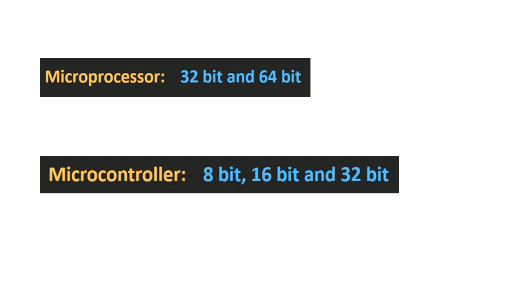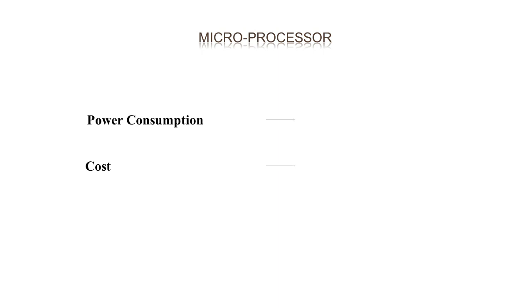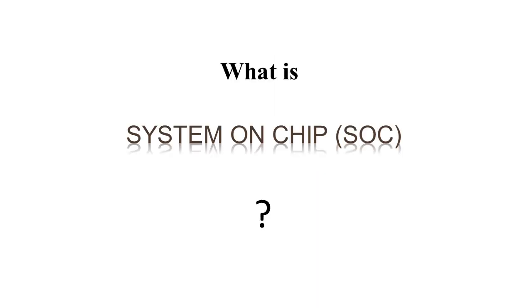Now let's see the difference in terms of power consumption and cost. In the case of a microprocessor, since all memory elements and IO ports are connected externally, the overall cost of the system as well as power consumption is higher compared to microcontrollers. The last part — what is a system on chip, also known as SOC?